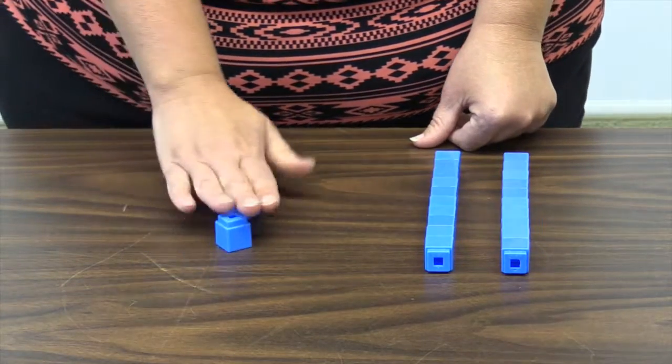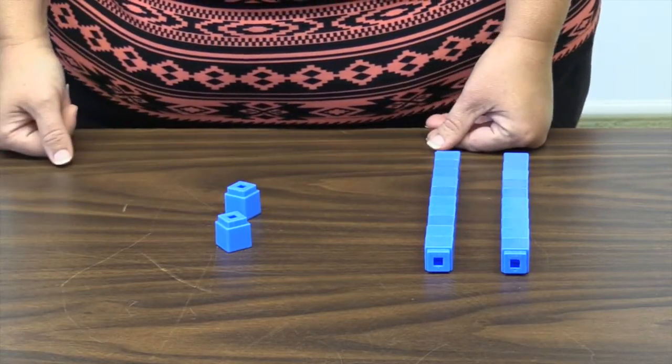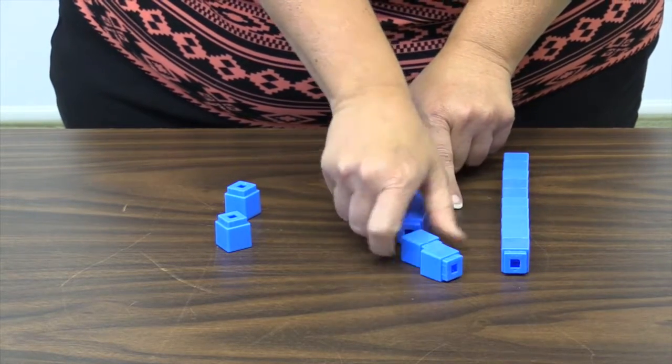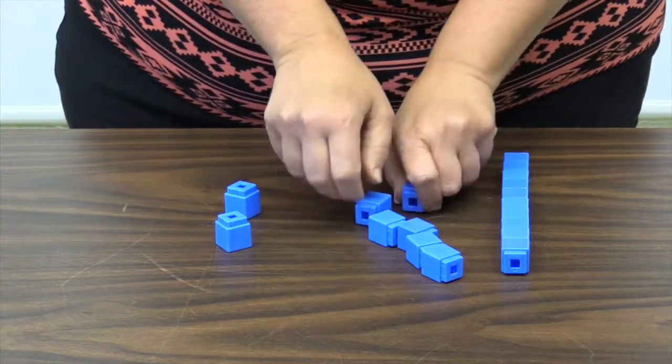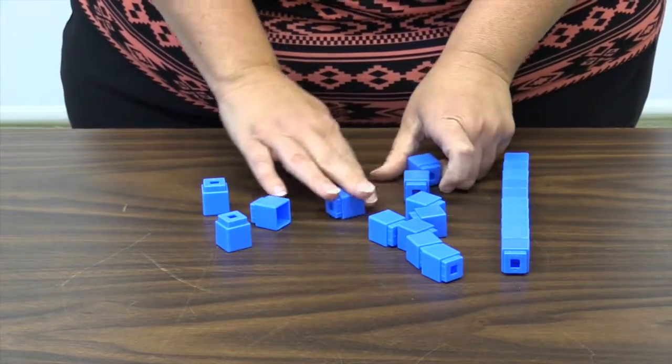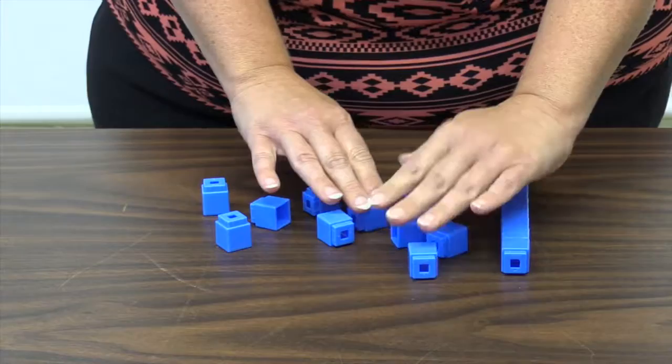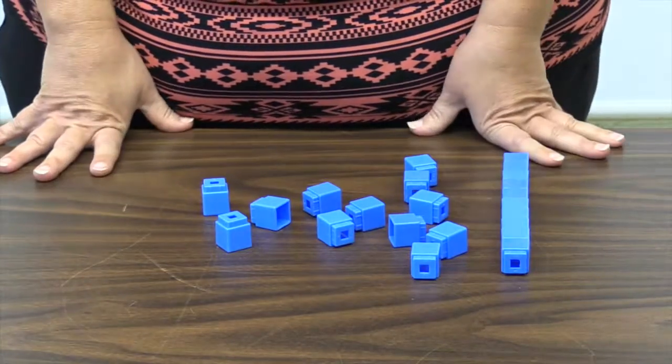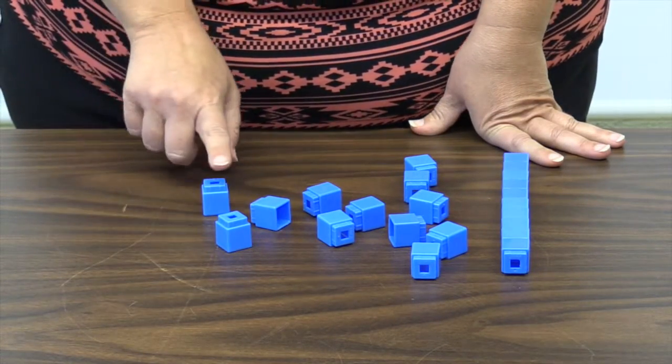But there are not enough ones to subtract the six ones. One of the remaining tens has to be broken up or regrouped into ones. The whole ten stick must be broken up into ones. The six ones can be taken away now, and then count for the result.